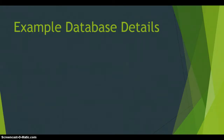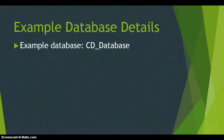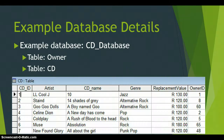In our previous lesson we were looking at the basics of a query using a SELECT statement. Just to remind ourselves about the database we are using: the CD database has an owner table which we aren't using just yet. We are mainly looking at the CD table, which has the CD ID, artist, CD name, genre, replacement value, and owner ID. That owner ID is linked to data in the owner table, which we'll look at in other videos when we deal with multiple tables. But for now we're just looking at single table queries.